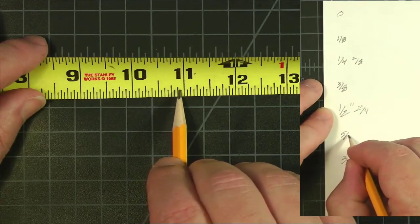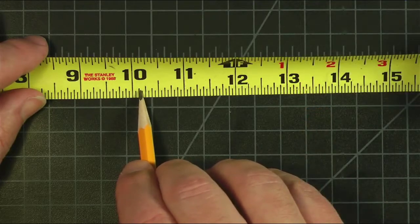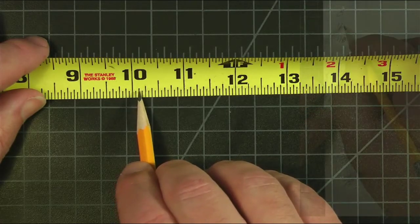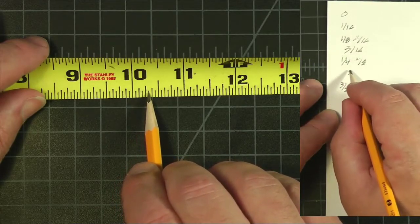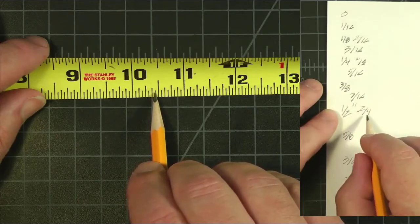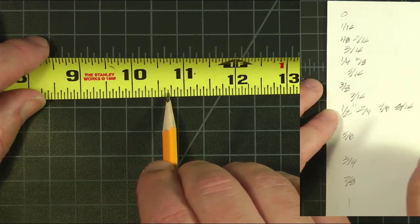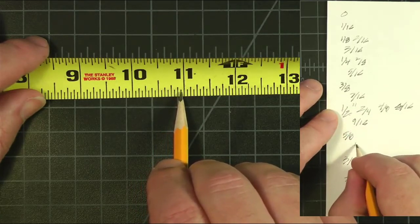And 8 eighths. If we divide these in half again we have sixteenths. So this is 1/16, 2, 3/16, 4, 5/16, 6, 7/16, 9/16, 11/16, 13/16, 15/16.